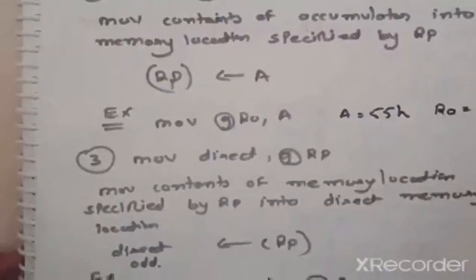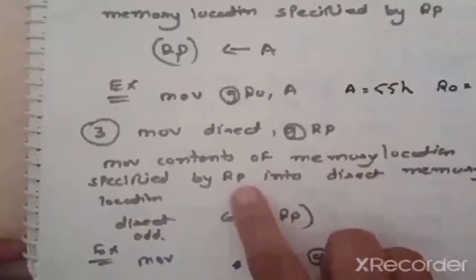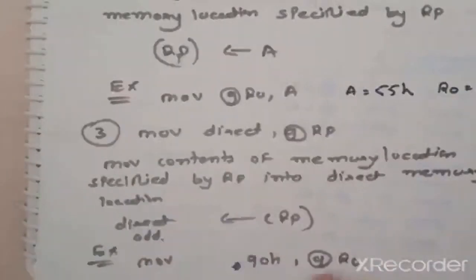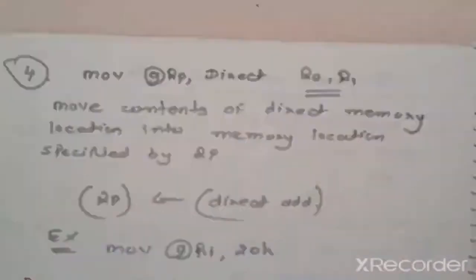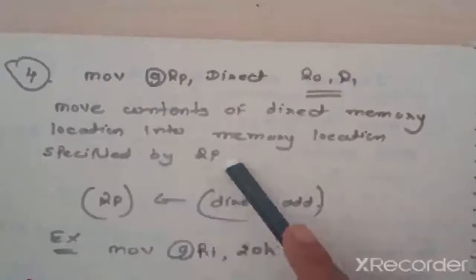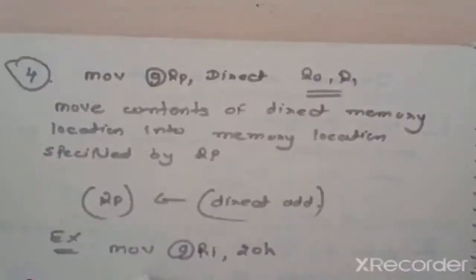Next instruction: MOV @Rp, direct — moves content of memory location specified by Rp into direct memory location. Content of Rp is transferred to direct address. Example: MOV 90H, @R0 — suppose R0 equals 7FH, then content of 7FH is transferred to 90H. Next instruction: MOV @Rp, direct — moves content of direct memory location into memory location specified by R0 and R1. Example: MOV @R1, 20H — content of 20H is transferred to the location addressed by R1.